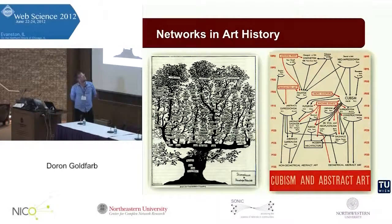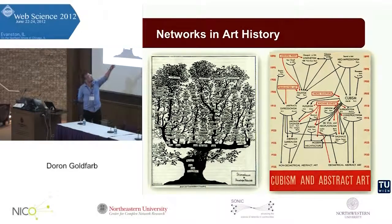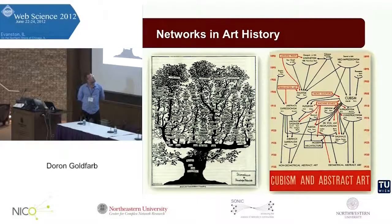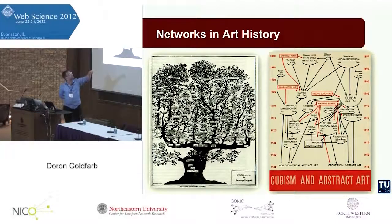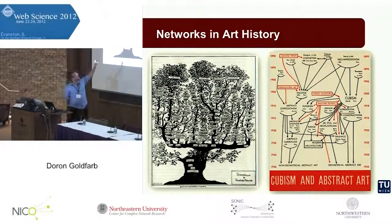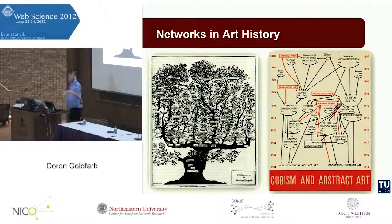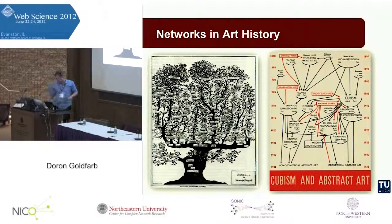Alfred Barr was the founder of the Museum of Modern Art in New York. For one of the first exhibitions at the MoMA, he designed a diagram showing the various influential relationships between modern art movements. You can see that this already takes place at different levels — here it is based on people, and here it is based on movements. In my talk, I will focus on person networks.